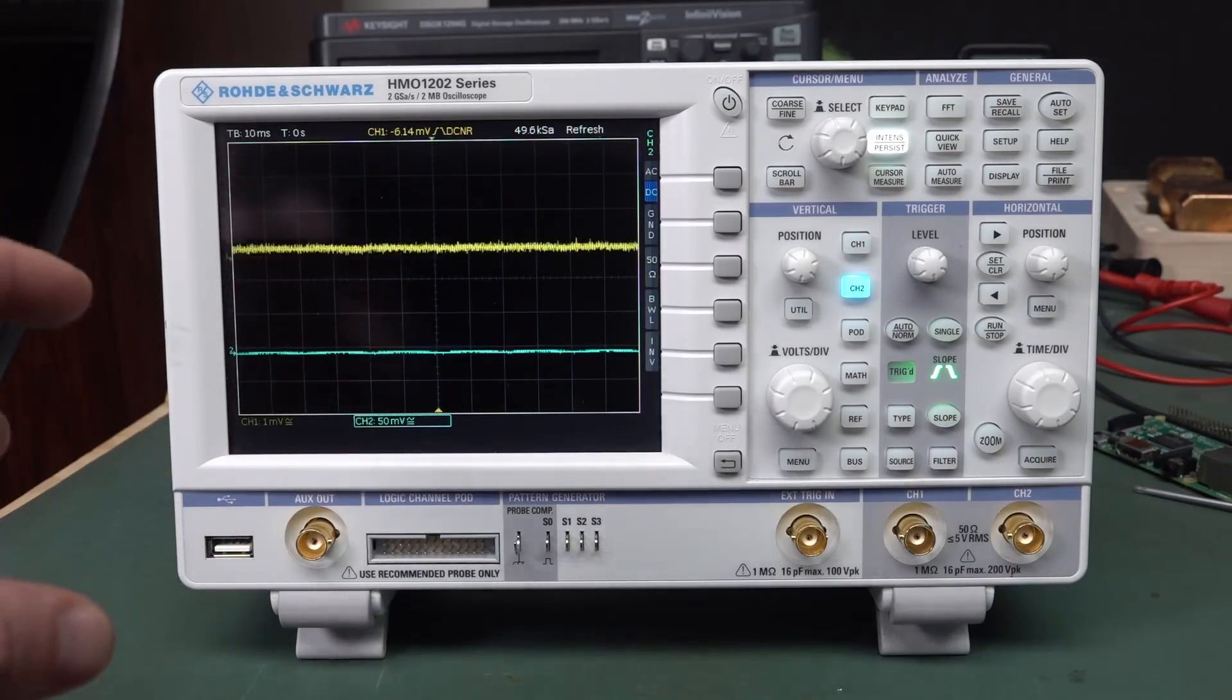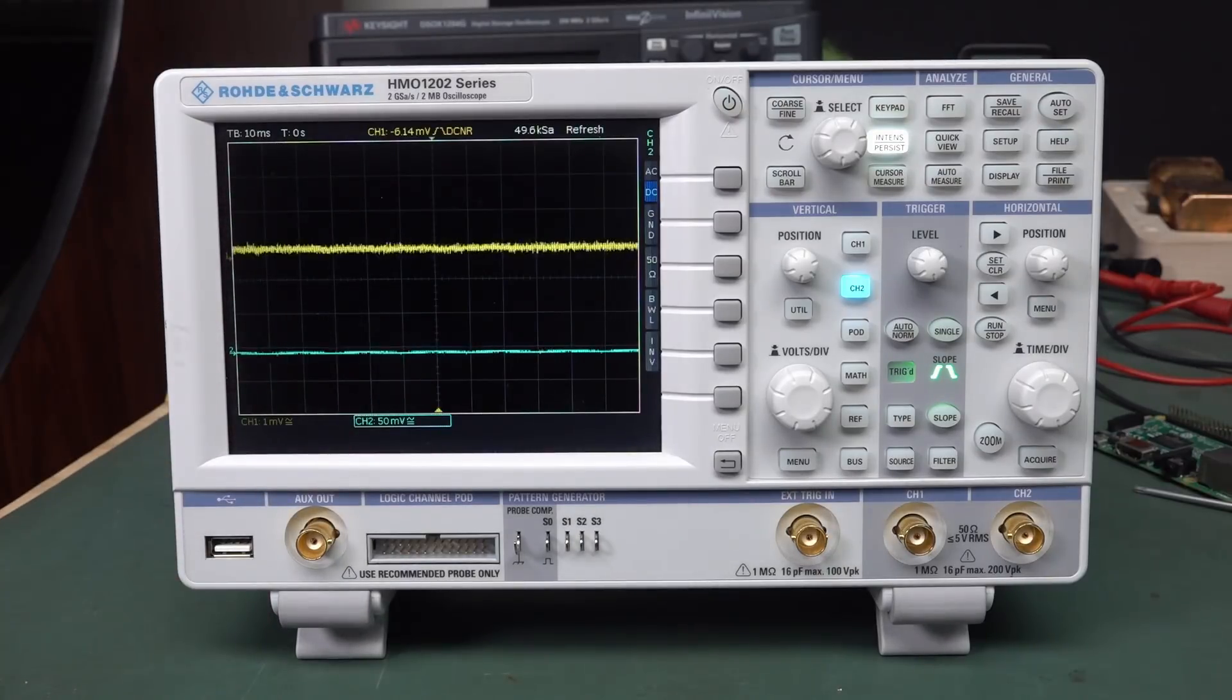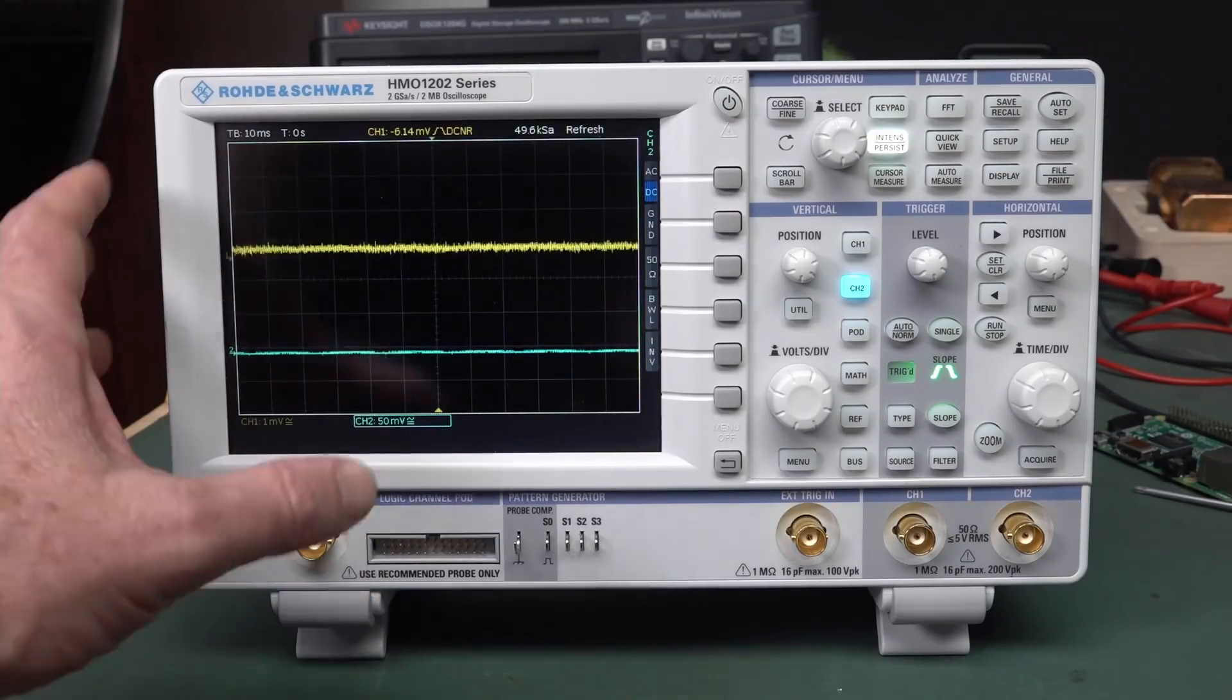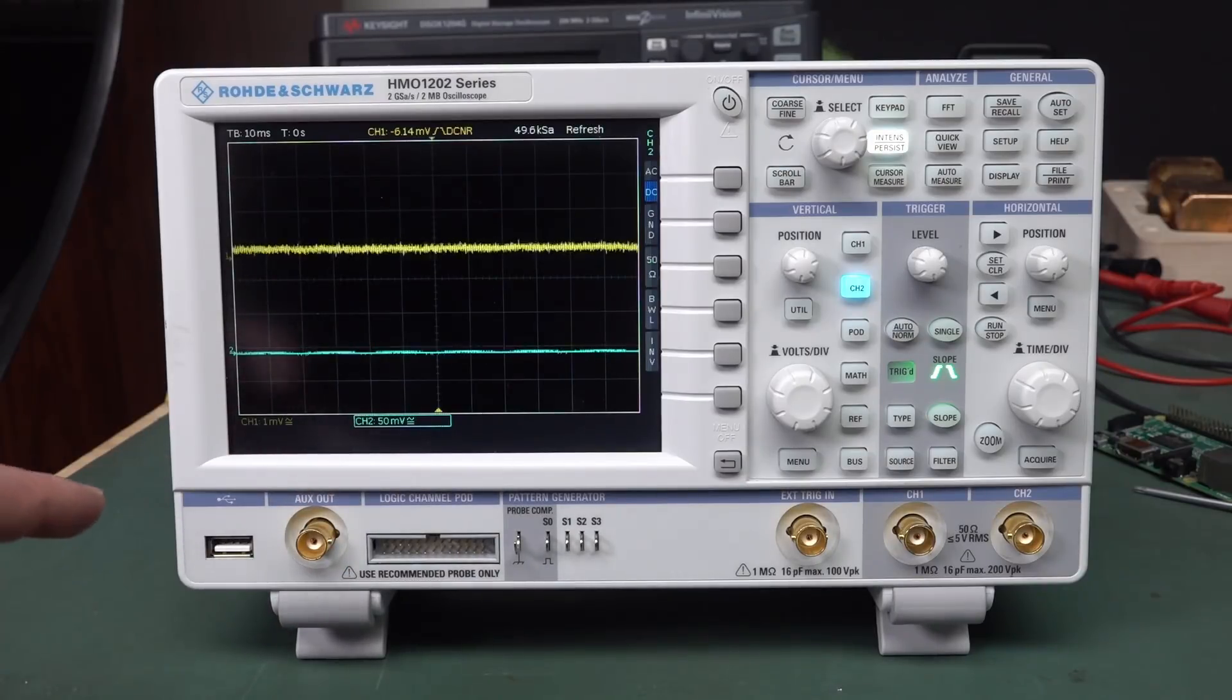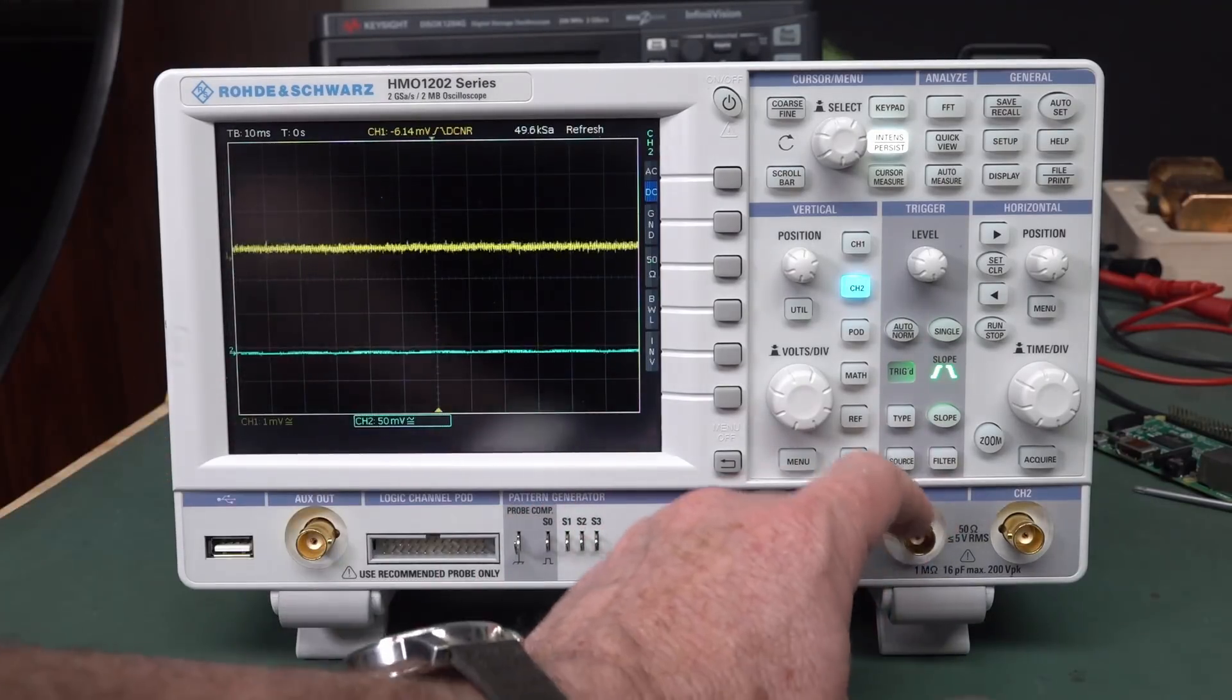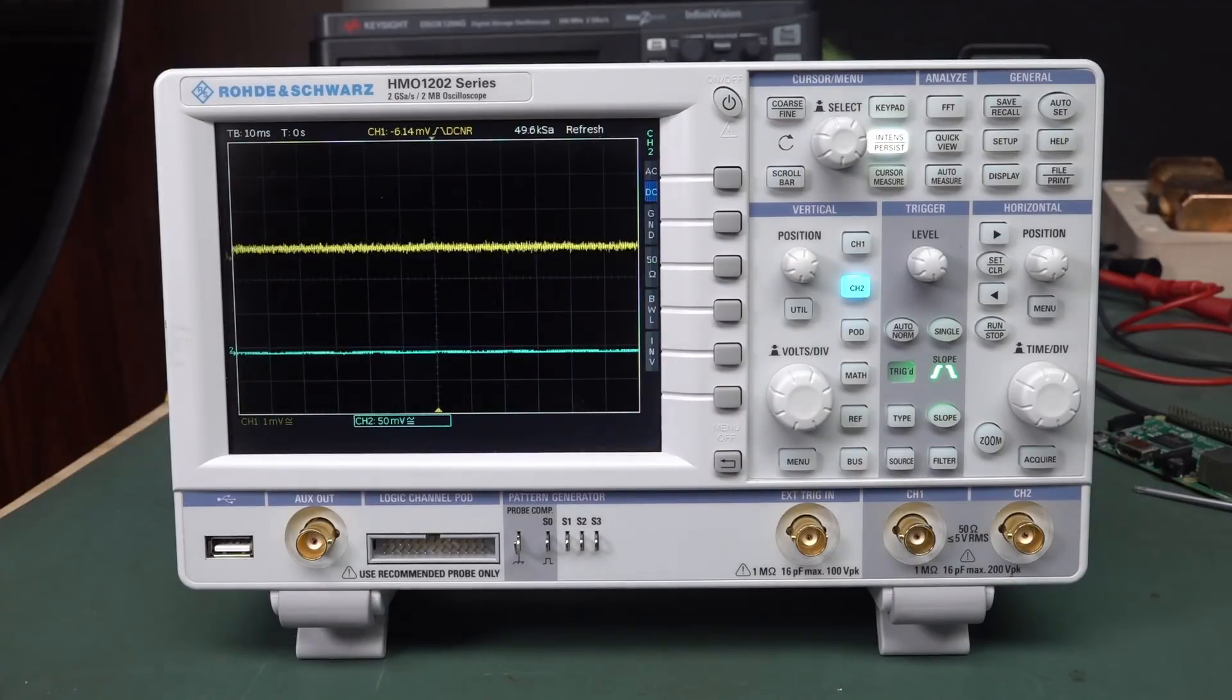Actually looking at the SPI signals that are controlling the front end gain chip in here, and that's how they actually get the bandwidth. Because this is software bandwidth, the base unit is 50 MHz, and it goes up to 300 MHz, and that's all in software. And they do that by sending SPI commands through to the front chip amplifier on here. I completely forgotten that I'd done that video. Anyway, I'll link it in up here if you haven't seen that hacking video, it was rather interesting.